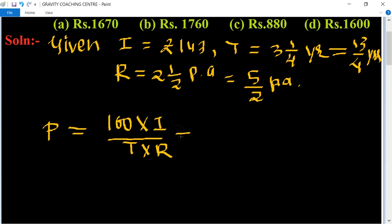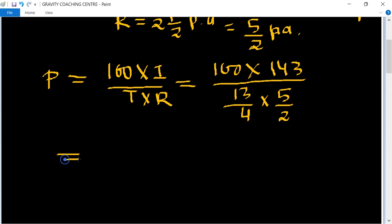So now we put the value of I, T and R. So hundred into interest is one hundred forty-three upon time is thirteen upon four, and rate of interest is five upon two. Equal to hundred into one forty-three upon two into four into two upon thirteen multiply five.